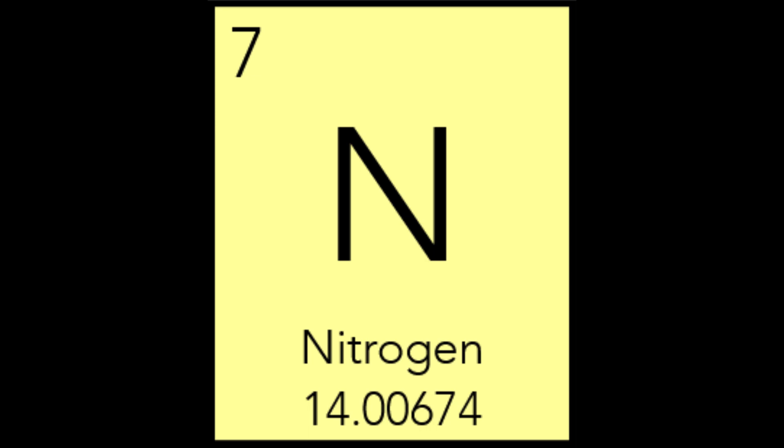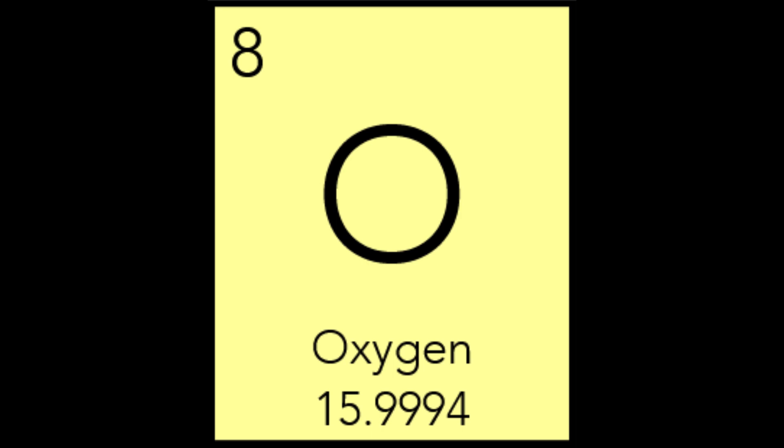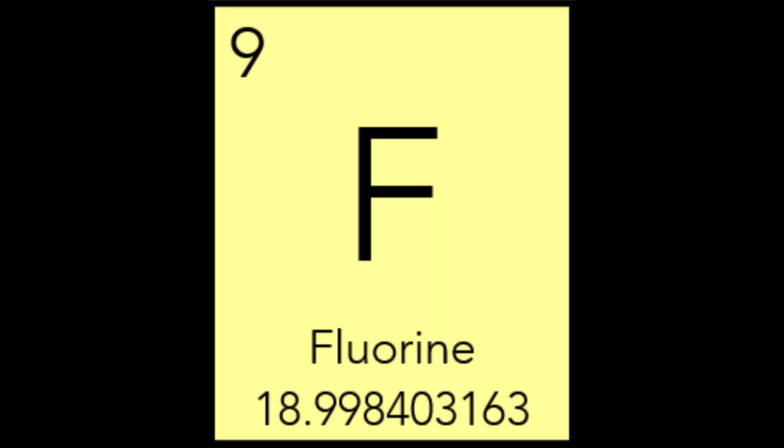Oxygen, with the symbol O, comes from a Greek phrase that means 'I form acid', as it was believed to be an essential component of acids. Oxygen is essential for breathing and combustion, and it forms O3, or ozone, a layer of which is present in the atmosphere, which blocks harmful UV radiation from reaching us. Fluorine, F, gets its name from one of its compounds, fluorospar or fluorite. The 'fluo' in fluorospar means 'flow' in Latin, as it was used to lower the melting point of many metal ores. Fluorocarbons are greenhouse gases, and fluorite is a mineral used in toothpaste to protect teeth from decay.